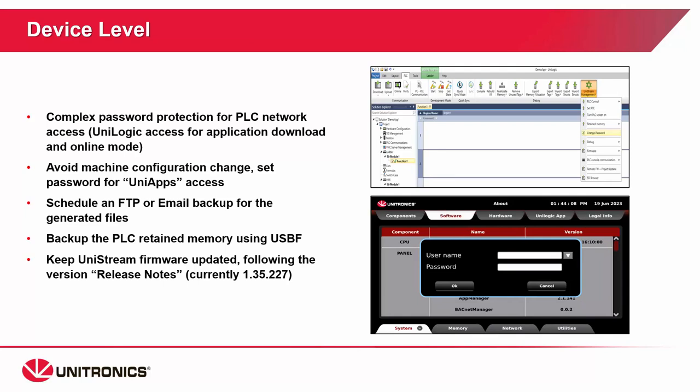Let's talk about device-level features that are available. UniLogic will now require that the user set an access password for each unit. You can change the password on first access when you go to download, or under UniStream Management, change password. It can also be set in UniApps. Anytime UniLogic goes to connect from a new device, the password will be requested. UniApps is the backdoor set of screens for UniStream — it has things like network configuration, tag access, and IO access. Unitronics recommends password-protecting the UniApps screen, from just a UniApps password to UAC, user account access.